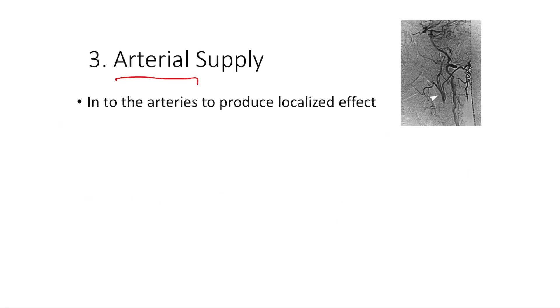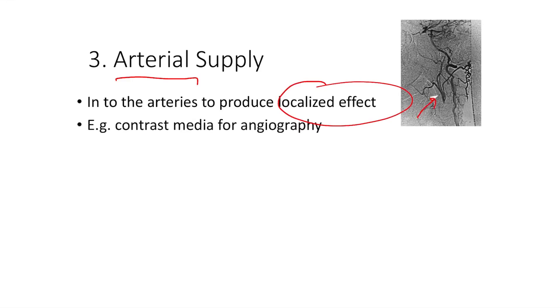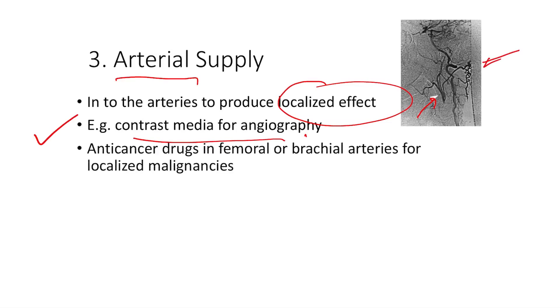The last category is arterial supply — don't confuse articular with arterial. Here, the drug goes into the arteries, but we want localized rather than systemic effects. The best example is contrast media for angiography: we inject contrast media into the arteries to study the patency of arteries in a specific area. Sometimes anti-cancer drugs are injected into femoral or brachial arteries to localize treatment to malignancies or carcinoma.